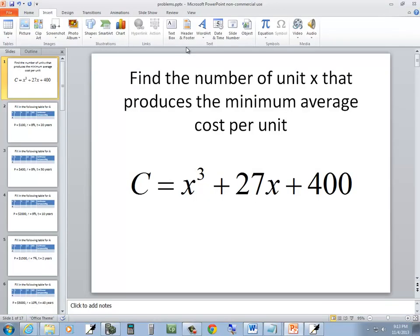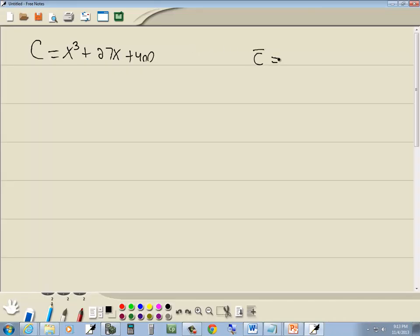We got c is equal to x to the third plus 27x plus 400. The minimum average cost, that's given by this formula: c bar is equal to c over x.